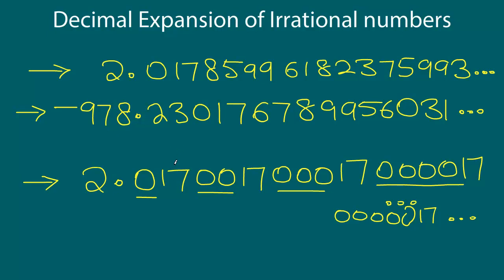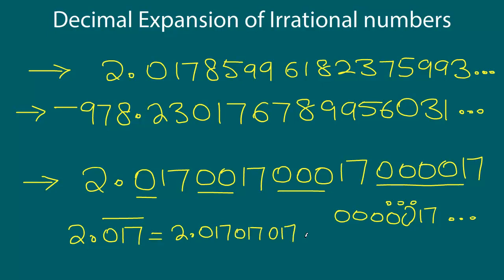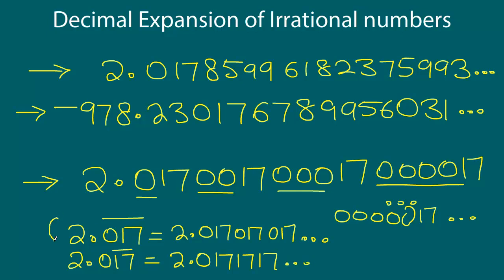We want to make sure we do not confuse this with something like 2.017 with the whole block repeating, which would look like 2.017 017 017... and so on. Or if we had 2.017 with just the 17 repeating, that would be 2.017 17 17... and so on. These two would be examples of rational numbers — non-terminating but definitely repeating. They are not irrational numbers, but the first three examples we wrote are definitely irrational numbers because they are non-terminating and non-repeating.